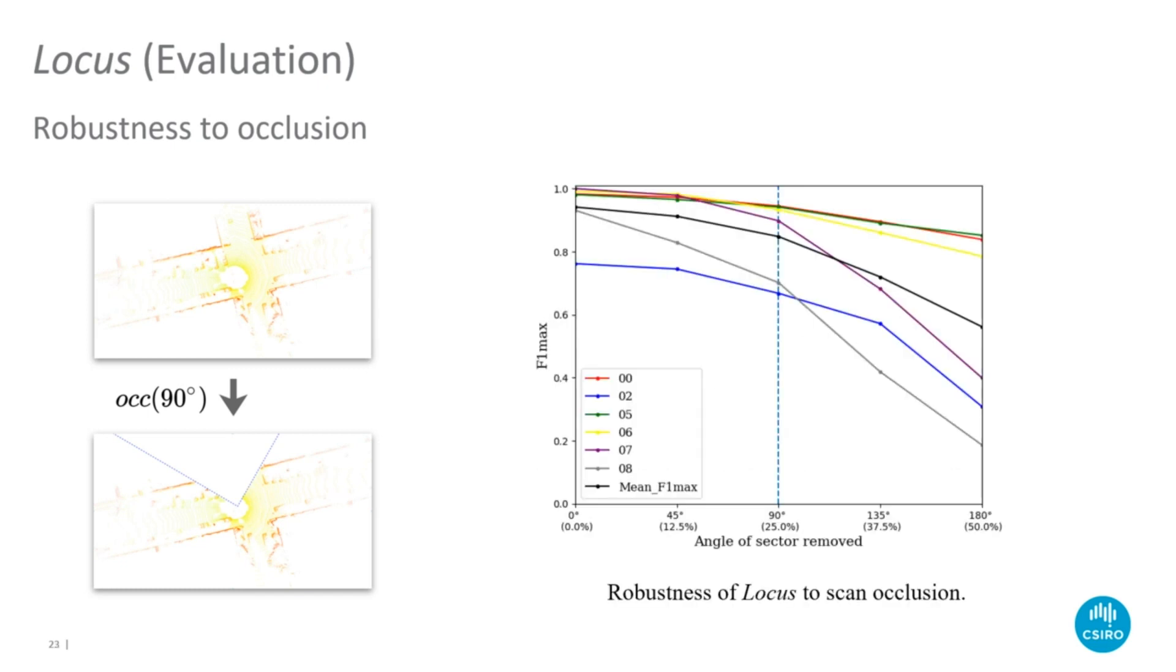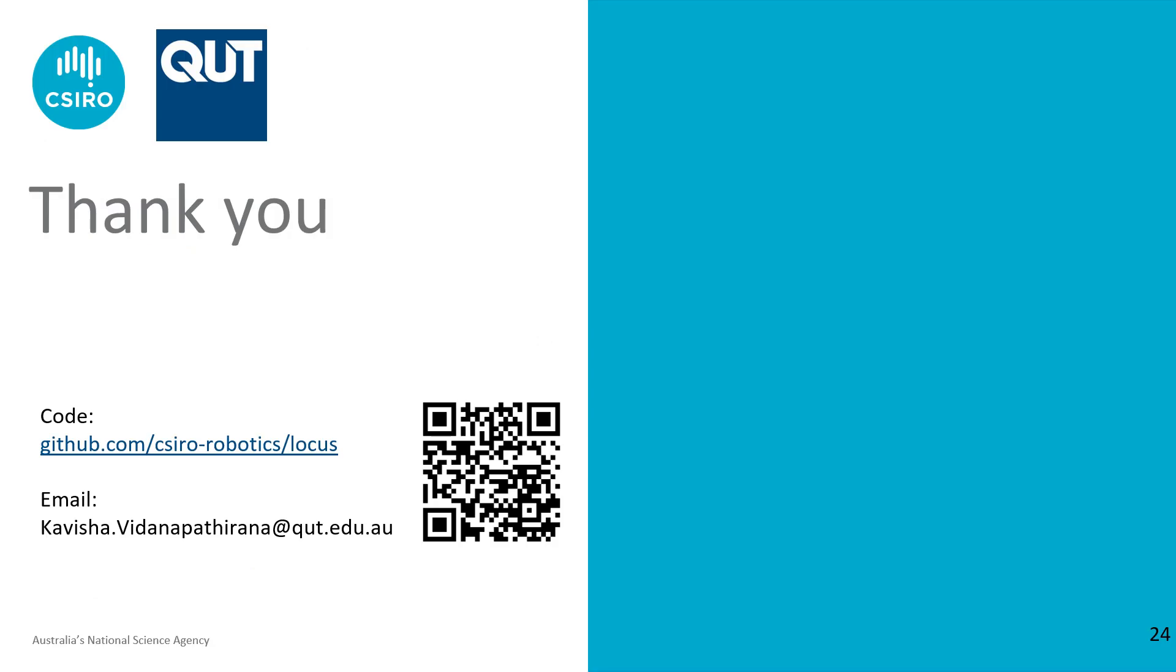We further extend the occlusion test to occlusion angles of up to 180 degrees. We note that in our method, the F1 max of sequences 00 and 05 remain above 80% even at occlusions of 180 degrees, where 50% of the point cloud is removed. Thank you.